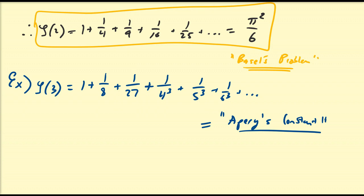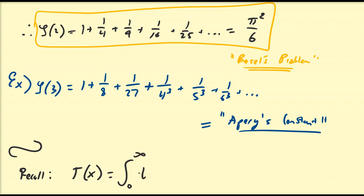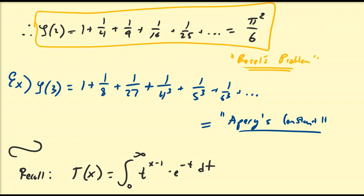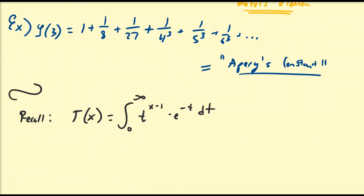You can evaluate several different types of infinite series via the zeta function — we'll leave that for another video. For the remaining portion of this video, we're going to connect the zeta function to other functions, for example the gamma function, and develop an integral representation for the zeta function. Recall that gamma of x is defined as the integral from 0 to infinity of t to the x minus 1 times e to the minus t dt.